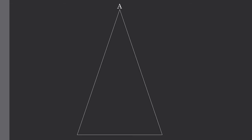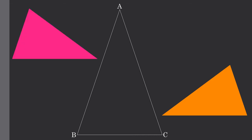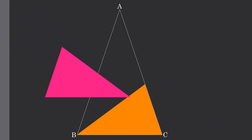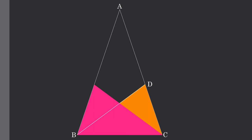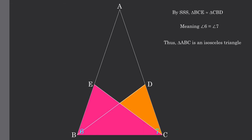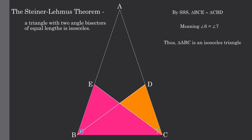Now looking back at our original triangle ABC, let's place our two separate triangles back. Be very careful when labeling and make sure to label correctly. Because we found that angle 6 equals angle 7, this means that triangle ABC must be an isosceles triangle, based on what we found earlier using the definition of an isosceles triangle. Thus proving that a triangle with two angle bisectors of equal lengths is an isosceles triangle.